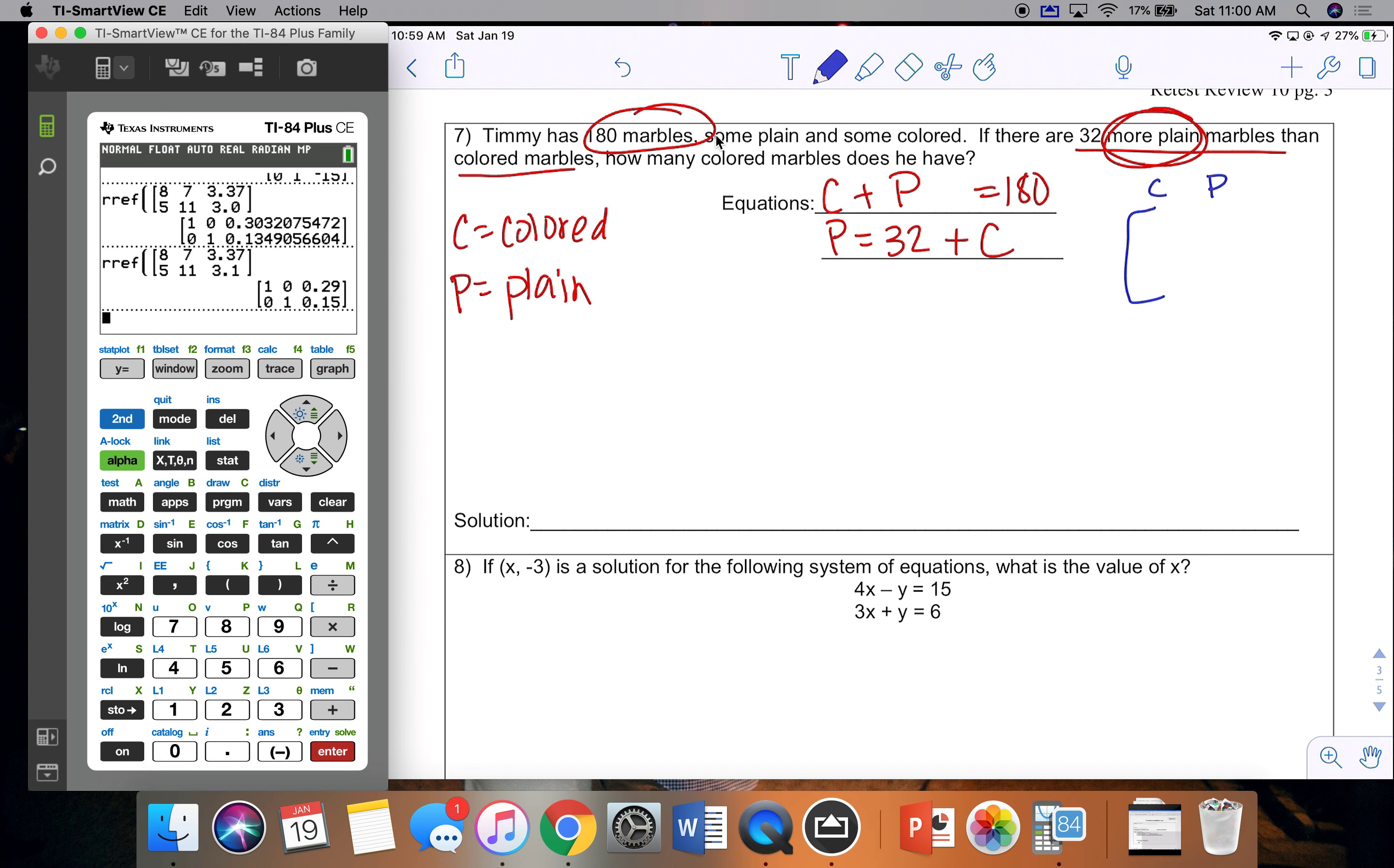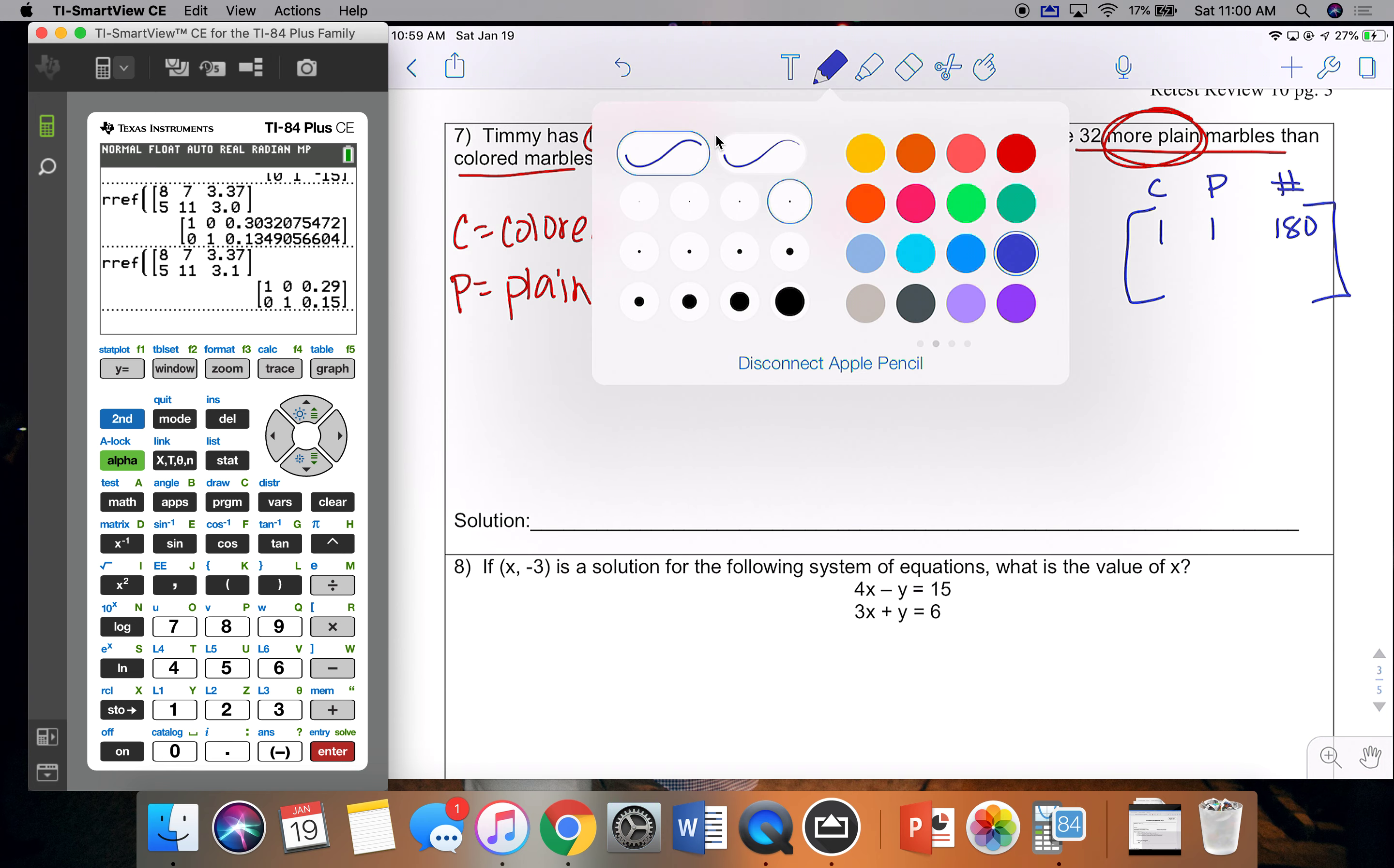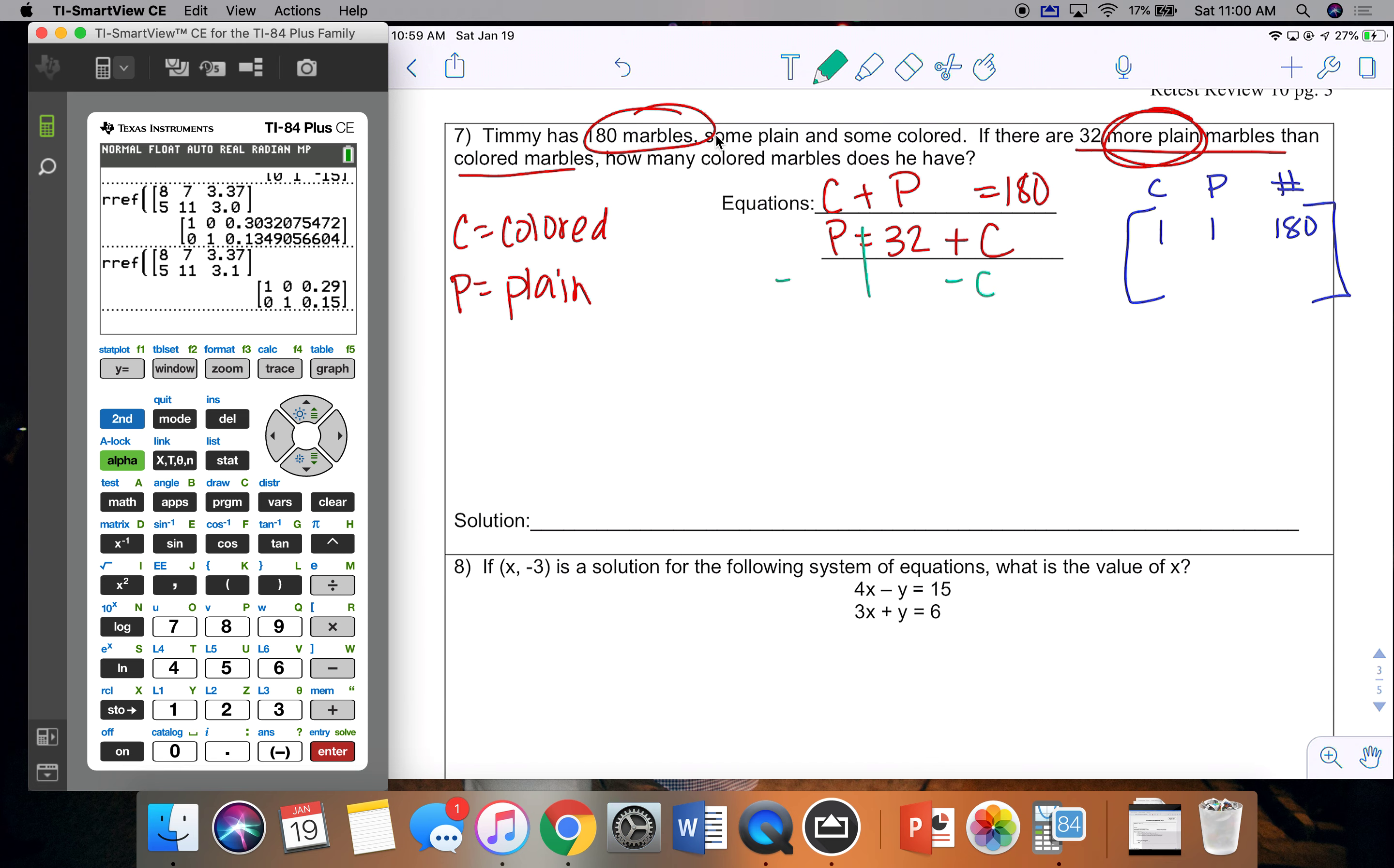Now, right now, the top equation is set up for matrices. One colored, one plain, 180 for the total. But the bottom one is not. So I'm going to move colored to the other side so that they are lined up. So negative one, positive one, and 32. It is very important that when you move C, wherever you put C, that it lines up with wherever C was at the beginning, or that you know where C is, which one is C. C should be the one with the negative one.